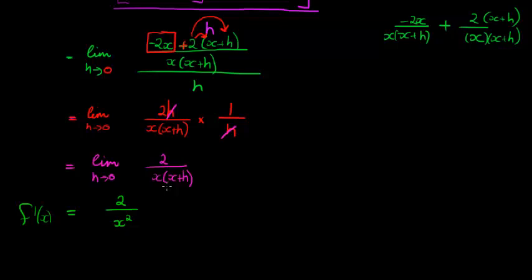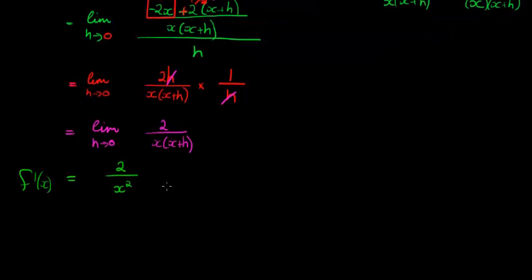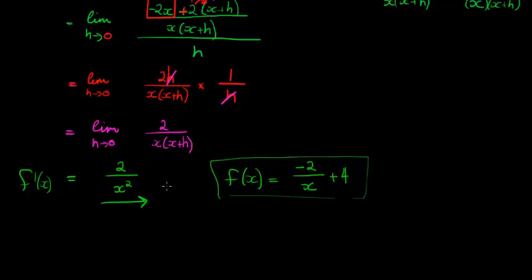In other words, the derivative of f(x), if f(x) is equal to negative 2 over x plus 4, then this would be the derivative of that function. In other words, this would be the formula for this function's gradient.